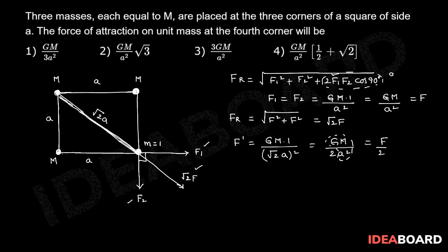So the force due to these two is root 2F. The force due to capital M mass on the unit mass is F by 2. Root 2F and F by 2 are both in the same direction, so the resultant force is equal to the sum of the two forces, F by 2 plus root 2F.